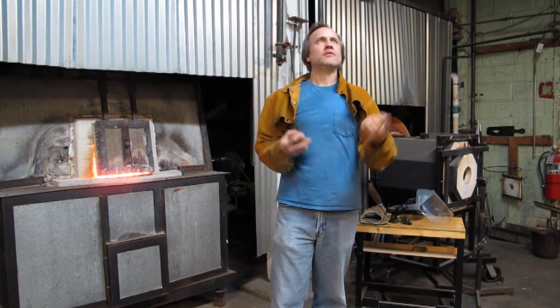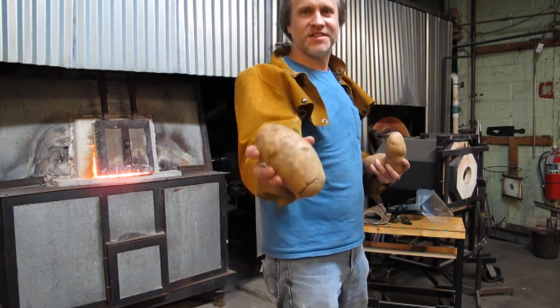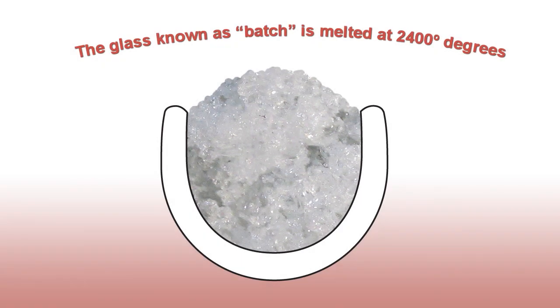What are the potatoes for? Put it in the furnace. After our furnace has been filled, the raw materials that make up our glass are melted at around 2400 degrees.